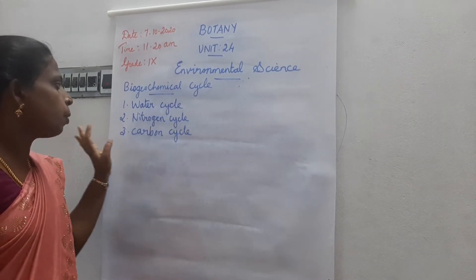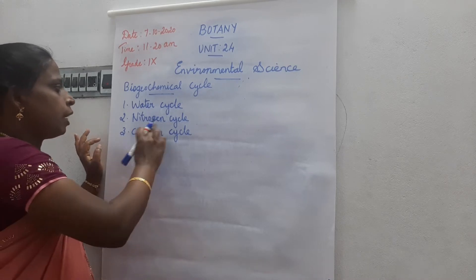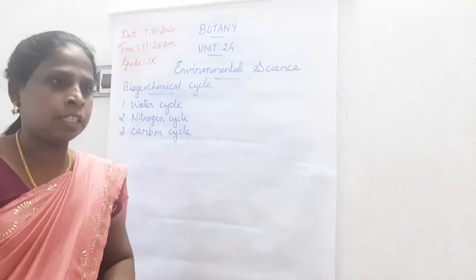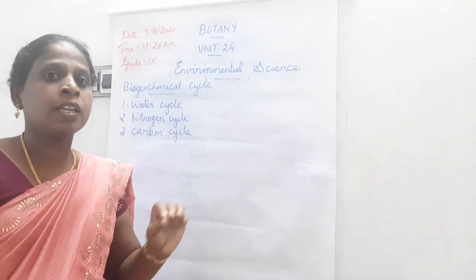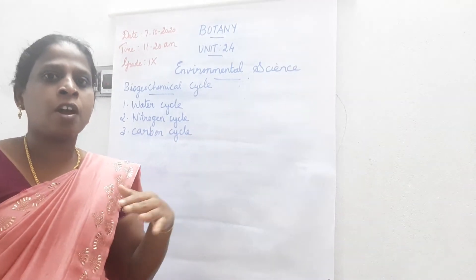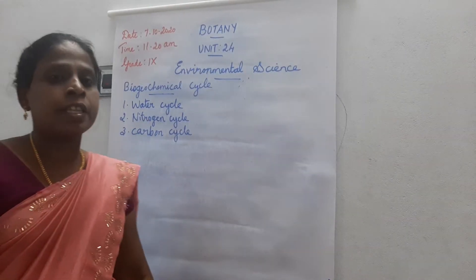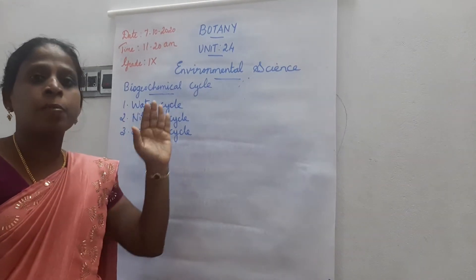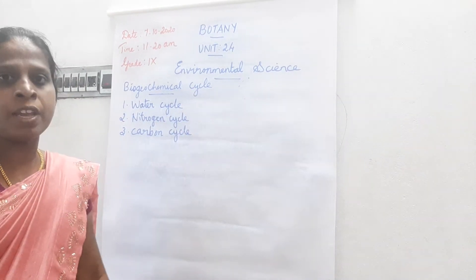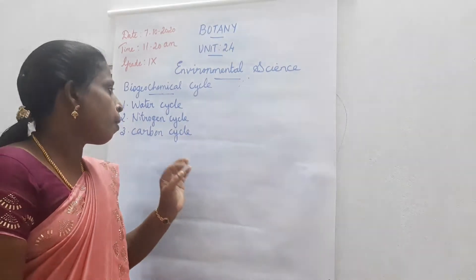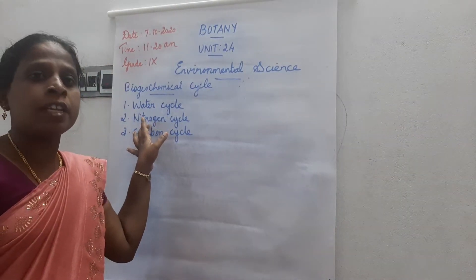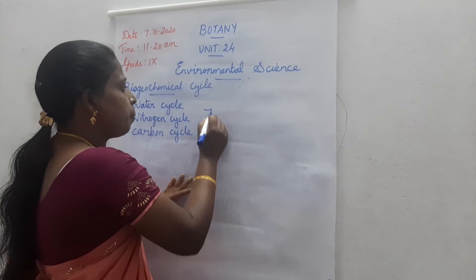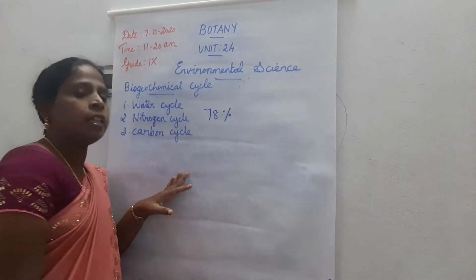Today we are going to learn about the nitrogen cycle. Nitrogen is an essential component for all living organisms. It is present in the atmosphere in the form of gaseous state. There is about 78% of nitrogen present in the atmosphere.